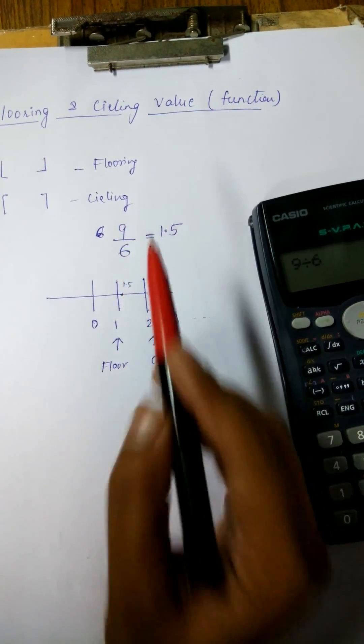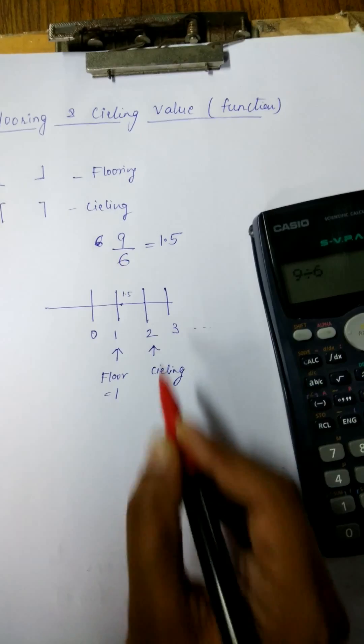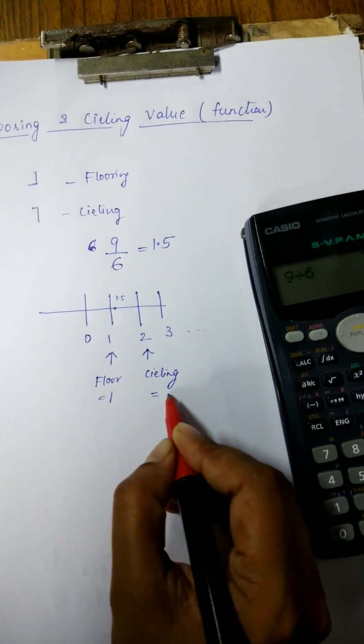It means that if we have to remove flooring value, it will be 1. And if we remove ceiling value, it will be 2.